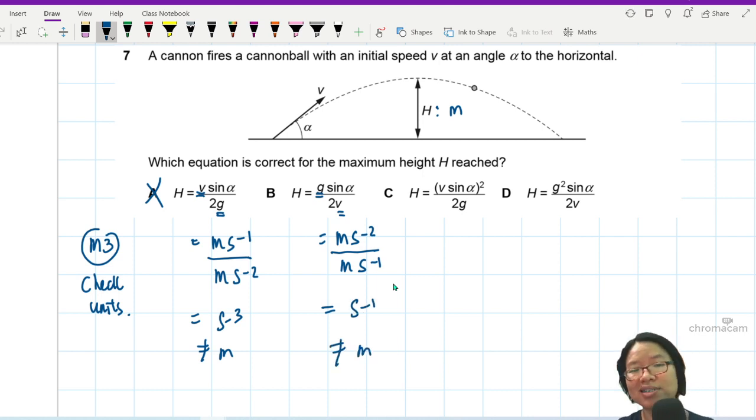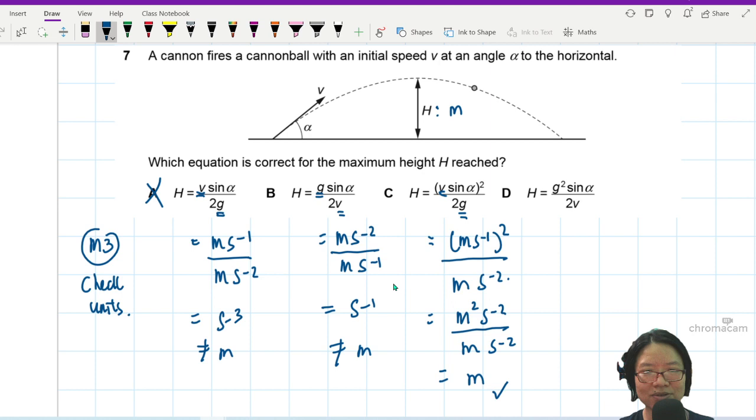I'm doing this thing called dimensional analysis or unit analysis, which is very helpful. Let's check this V, MS^-1 square, divided by MS^-2, because G is gravitational acceleration, MS^-2. So from here, I will get M^2 S^-2 divided by MS^-2. Everything cancels off. You will get M. Ding ding. So the answer is C.